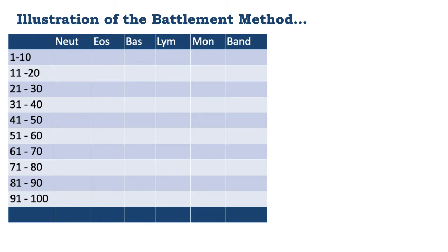To illustrate the battlement method further, you keep a tally of the number of cells counted up to 100 or 200. We are going to count 100 cells. We have a table with 10 rows; each row gives a count of 10 cells, and by the time we reach the 10th row we will have counted 100 cells.